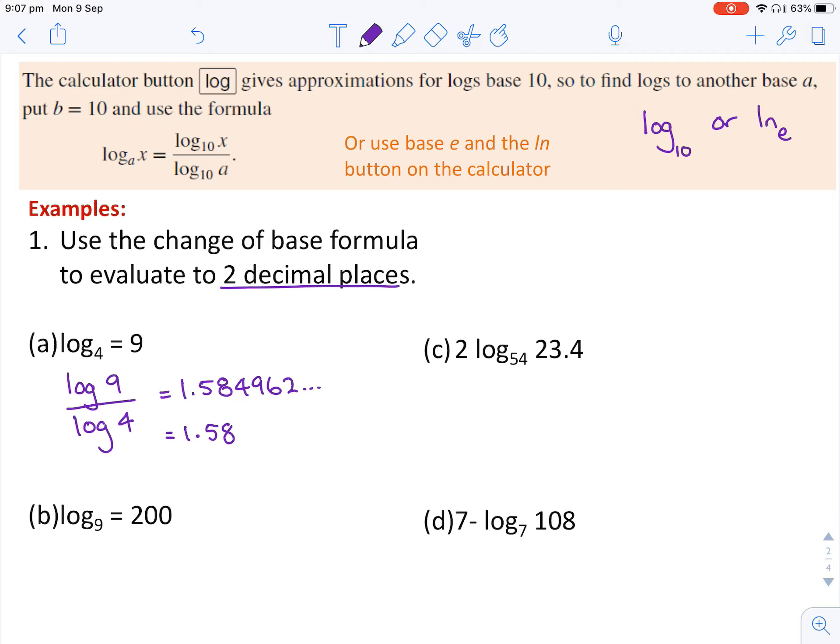In part b, we do the same thing. And for those of you who want to use the natural log button, that will be the same thing as ln 200 or log of 200 over natural log of nine. Yes, it's written ln. However, we still read it as a log. Again, typing that in the calculator and rounding to two decimal places is 2.41.